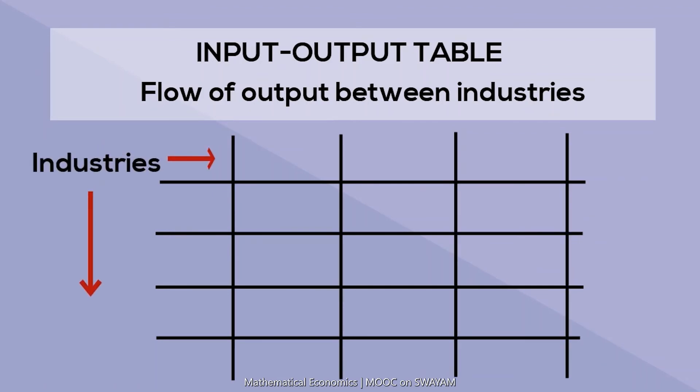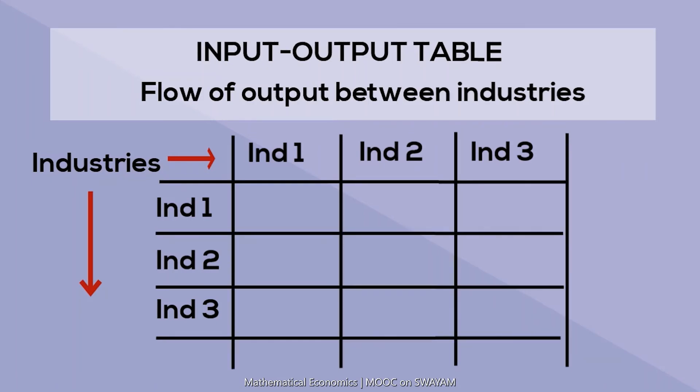The element in the first row and the first column gives the amount of output of industry 1 used as input in industry 1. The element in the first row and second column gives the amount of output of industry 1 that goes as input to industry 2, and the element in the first row and third column gives the amount of output that goes as input to industry 3. The elements in the other blocks of the table give the amount of output of industry 2 and 3 that goes to industry 1, 2, and 3.